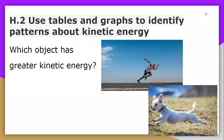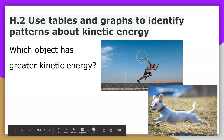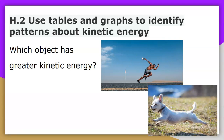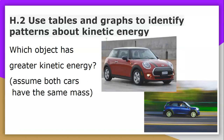Moving on to some pictures to make sure we got this idea. Which object has the greater kinetic energy: the human running, or the little dog on the bottom? The winner is the human — that man is definitely more massive than the dog.